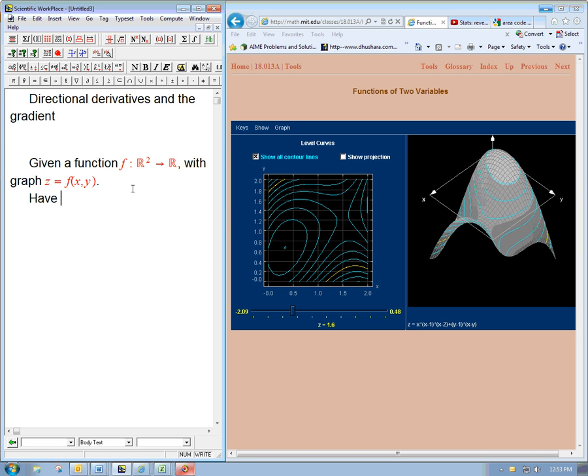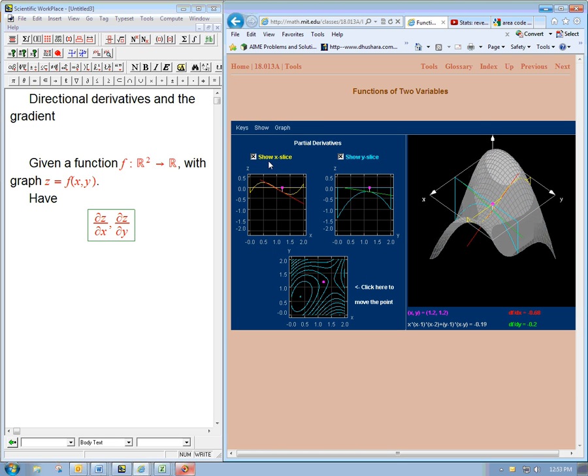We have the partial derivative of z with respect to x and the partial derivative of z with respect to y. And these are really directional derivatives in themselves. dz/dx means if I'm at a particular point, let's go to show partial derivatives, if I'm at like this pink point...